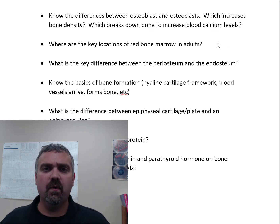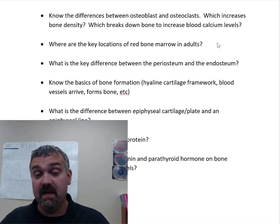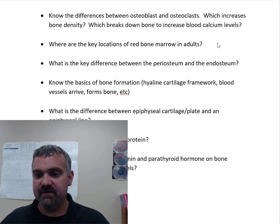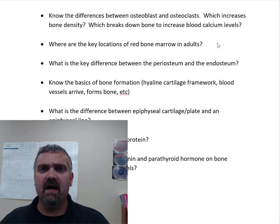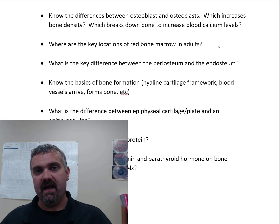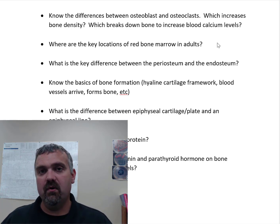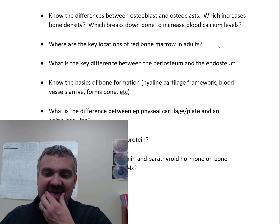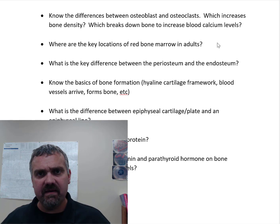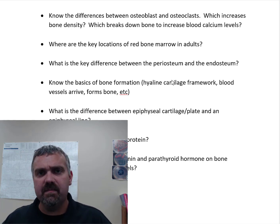Where are the key locations of red bone marrow in adults? When you're young, all your bone marrow is red. As we get older, a lot of the red bone marrow — like in the shafts of long bones — becomes yellow marrow, which is fat. Yellow marrow can become red marrow again if needed. In adults, red bone marrow primarily stays in the epiphyses of long bones, but the flat bones are the key — your sternum, ribs, and most importantly your coxal bones, the ileum, ischium, and pubis, because that's where bone marrow biopsies and transplants are performed.